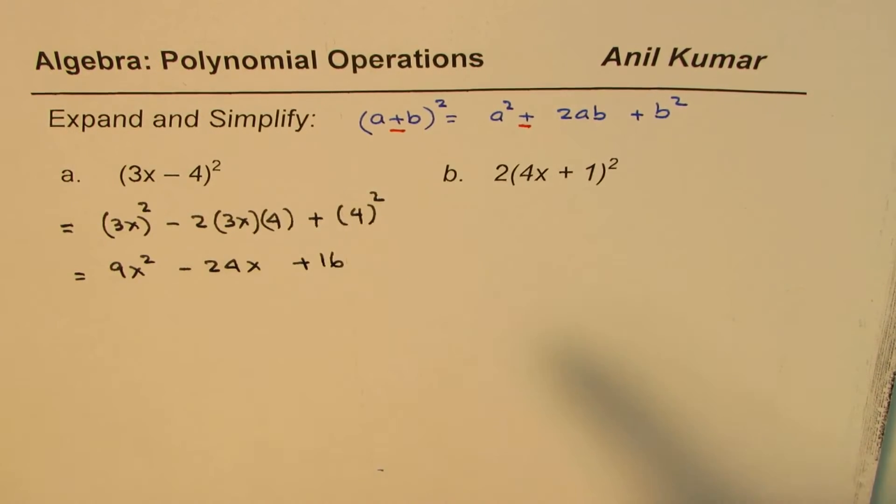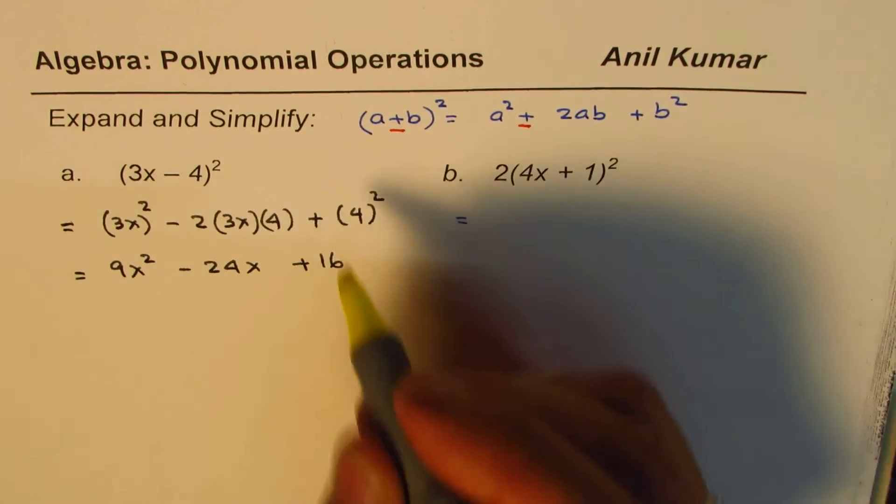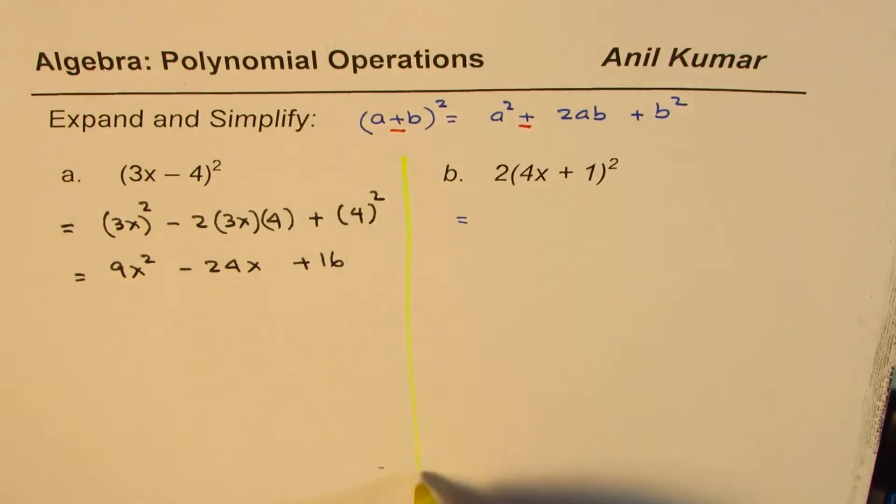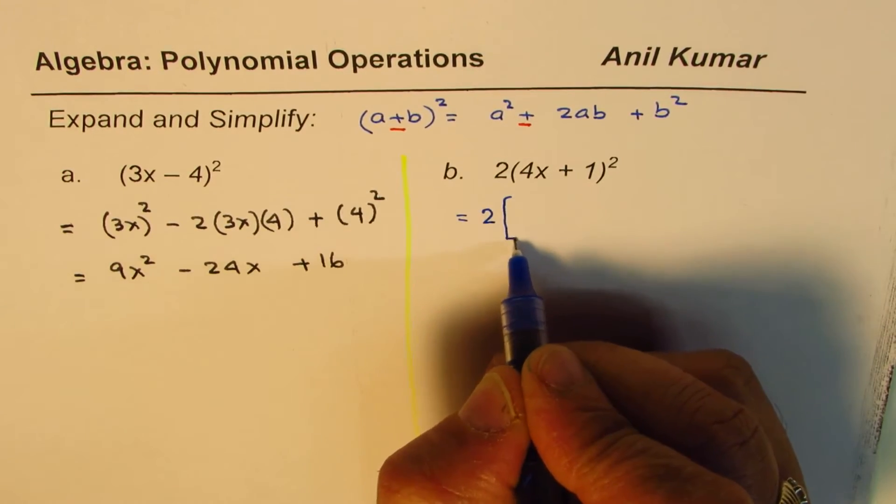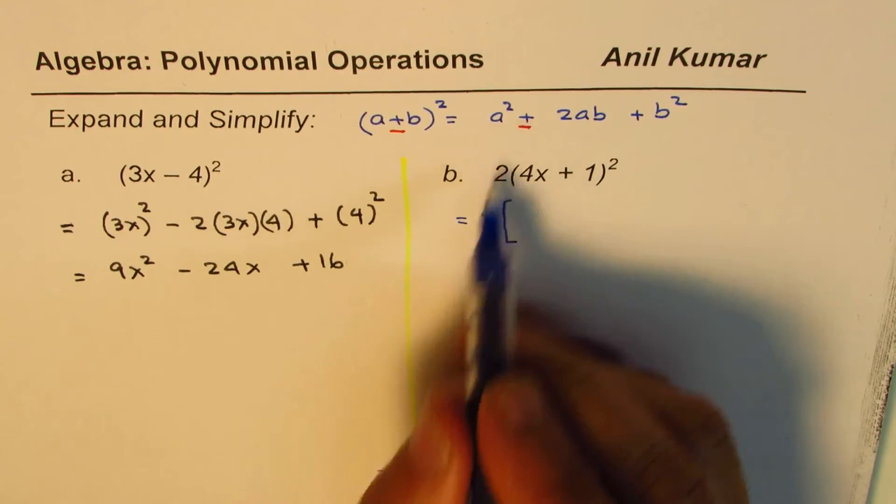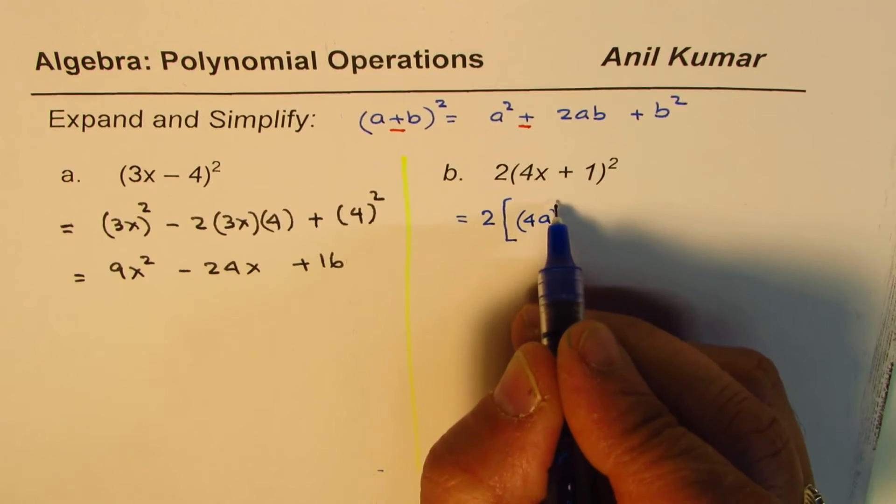Let's repeat this operation for the second one also. In this case, we have 2 times (4x+1)². So we'll do 2 times, and let me use a square bracket, and we'll expand this using this formula. Right, so we have 4x as a.